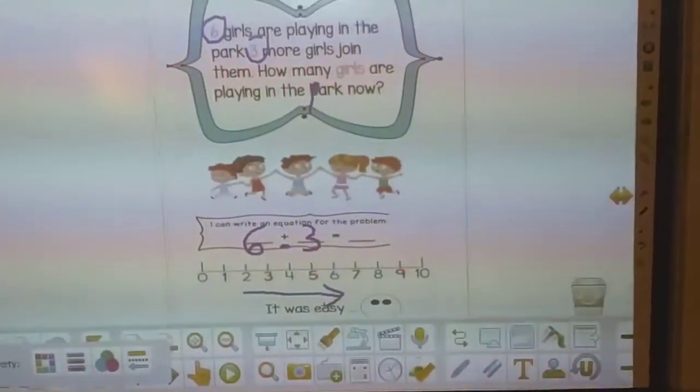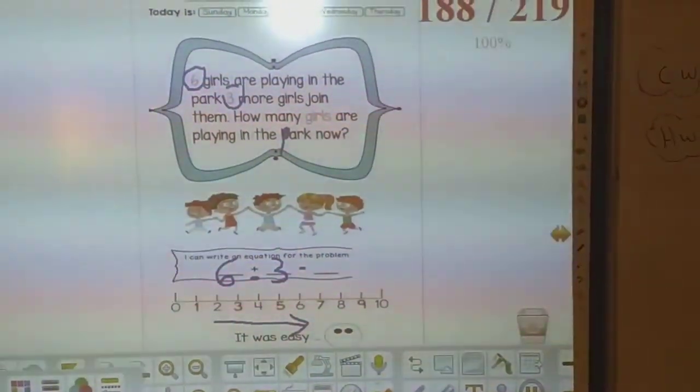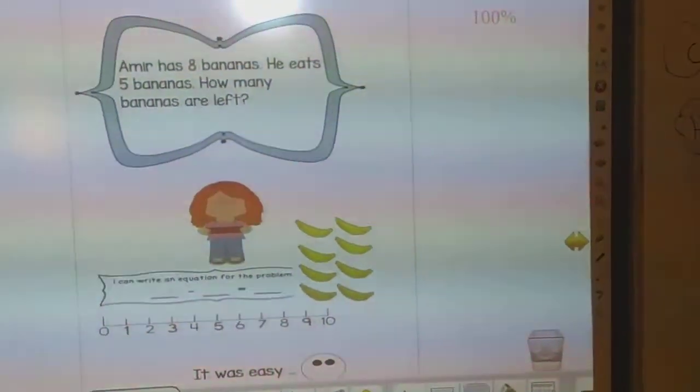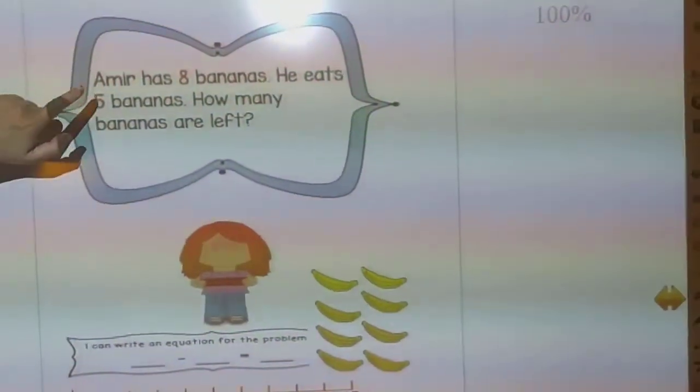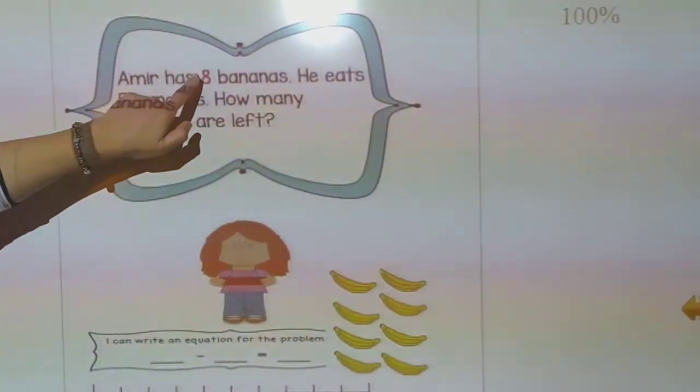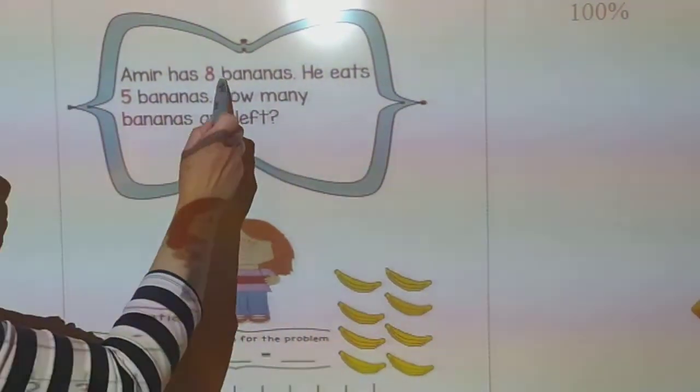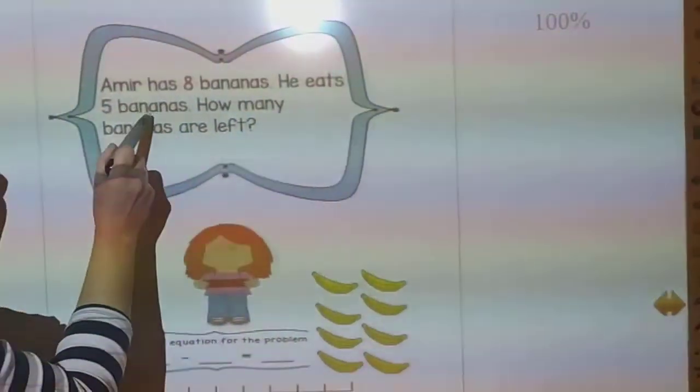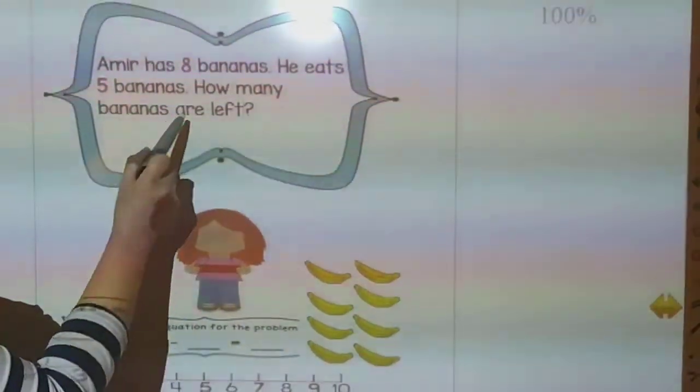Next question. Here I have a word problem again. Amir has eight, what's this word? Bananas. He eats five bananas. How many bananas are left?